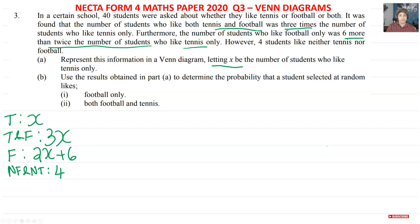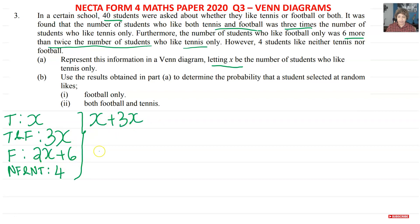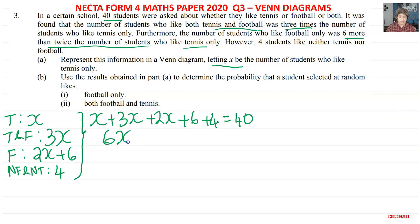Now let's find what x is. All these numbers must add up to 40, so we form a linear equation: x + 3x + (2x + 6) + 4 = 40. Adding like terms: x + 3x is 4x, plus 2x is 6x, and the constants 6 + 4 give 10, so we get 6x + 10 = 40.